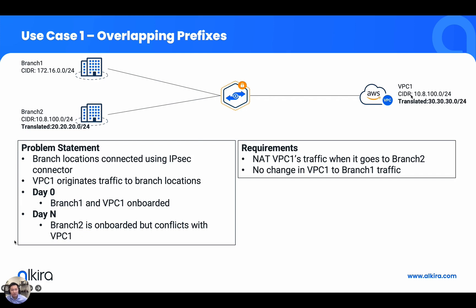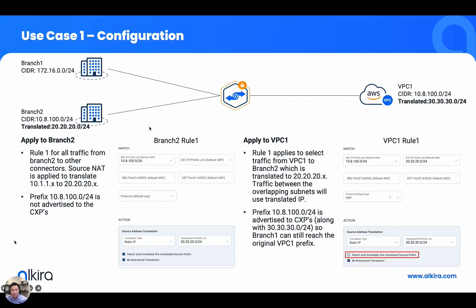Since these two subnets overlap, we're going to let VPC one remain 10.8.100.0 whenever it talks to any other parts of the network. For traffic from VPC one to branch two, we're going to source NAT 10.8.100.0 to the 30.0.0.0 subnet. For branch two, since it can no longer be 10.8.100.0/24, for all traffic coming from branch two we're going to source NAT it to 20.0.0.0/24 regardless of where that traffic is going. Let's see how that can be configured in Elkira.